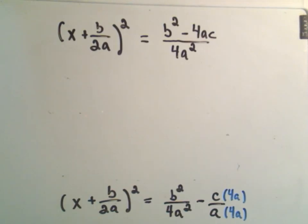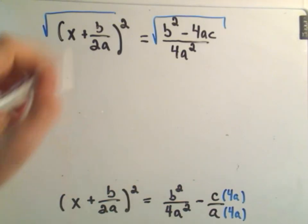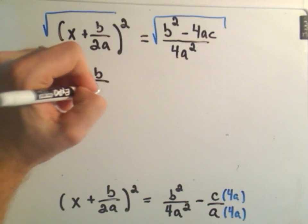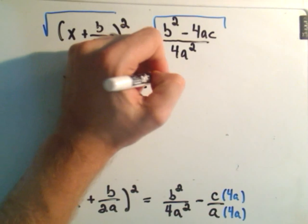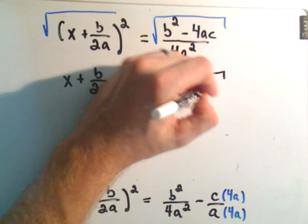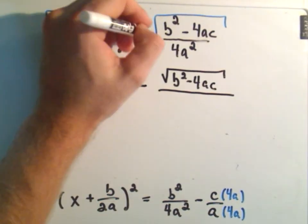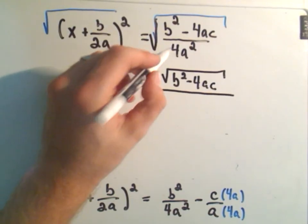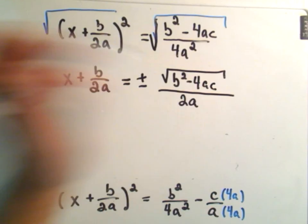At this point, to get rid of the square, we have to take the square root of both sides. On the left side, we'll just be left with x plus b over 2a. On the right side, remember if you take a square root, you get positive and negative. So we'll get the square root of the top, b squared minus 4ac. But also remember, if you have a big square root, you can take the square root of the top over the square root of the bottom. If you take the square root of the bottom, you'll just be left with 2a.